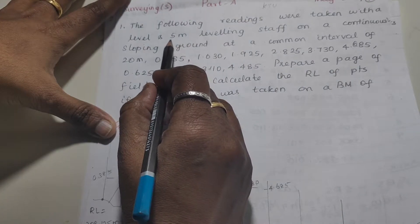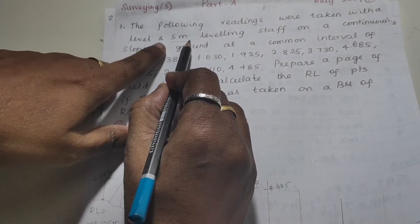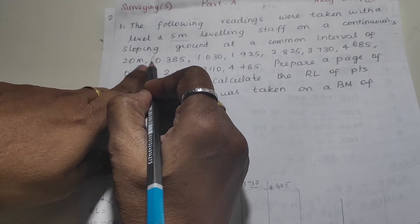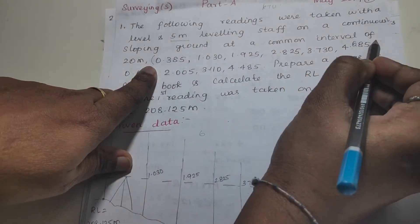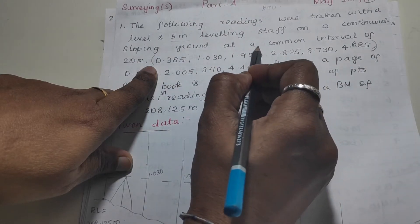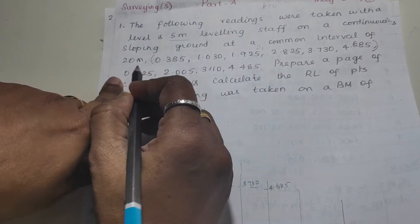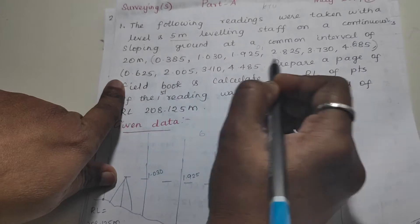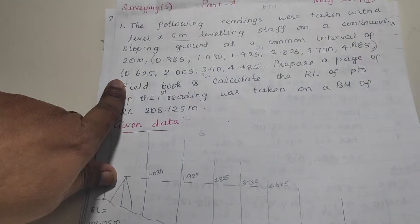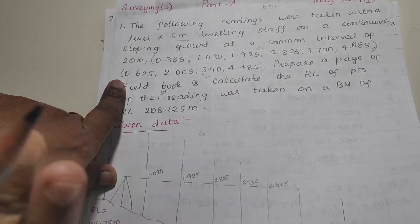In continuous sloping ground, they use a 5-meter leveling staff. We have readings at a station. Now we have to enter the remaining readings at the station into the field book.